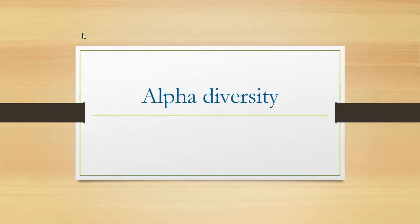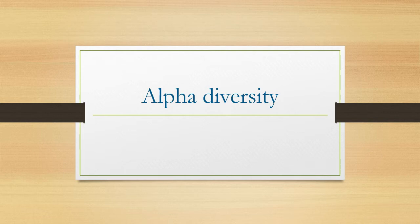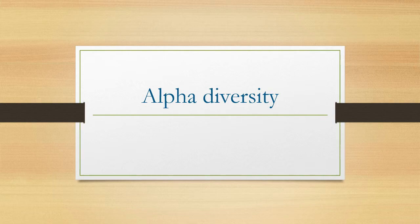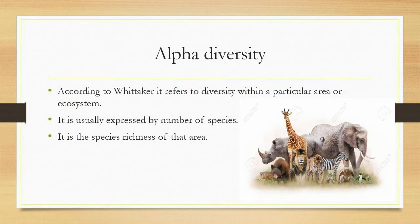Today's class is on alpha diversity. What do you exactly mean by alpha diversity? It's quite simple — if you go to some place like your home and find some animals there, like a dog or a cat, the organisms found in that area specifically represent the alpha diversity of that region. According to Whittaker, it refers to the diversity within a particular area or ecosystem, and that particular type of diversity classification is called alpha diversity.